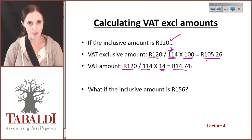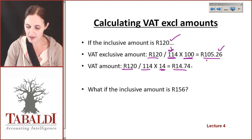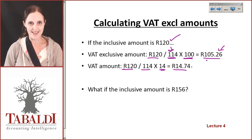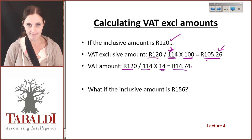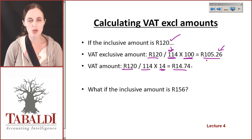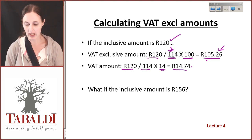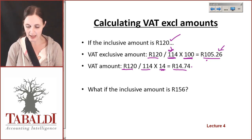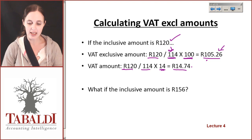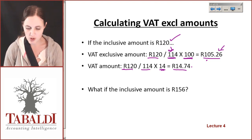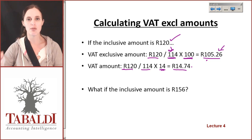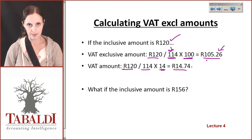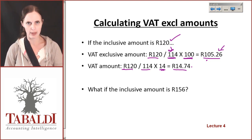If you calculate this backwards and forwards — take 105.26 and multiply that by 14% and see whether or not you get 14.74. Make sure that you do. When doing VAT, make sure that you can calculate it both ways. If you've got an exclusive amount, multiply it by 14% to get the VAT. When creating an exclusive from an inclusive amount, divide by 114 and multiply by 100 — that gives you your exclusive amount — and the difference between the two gives you your VAT.